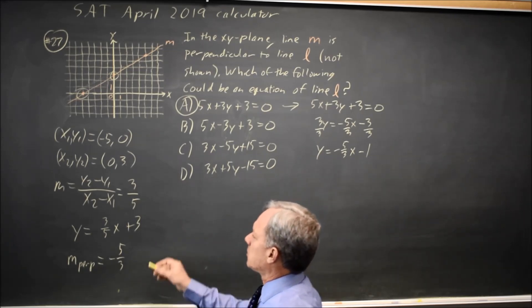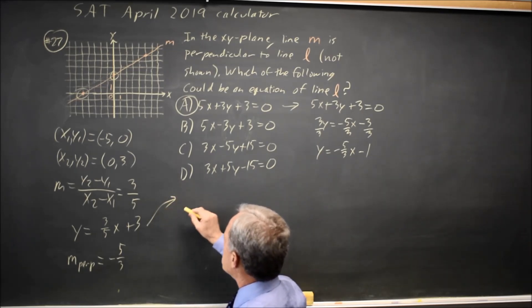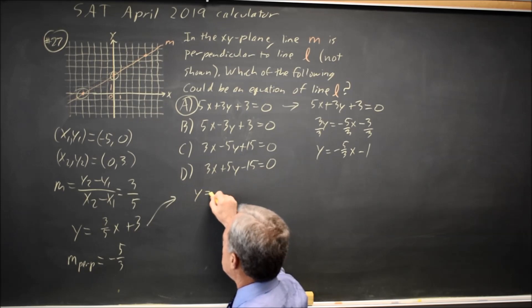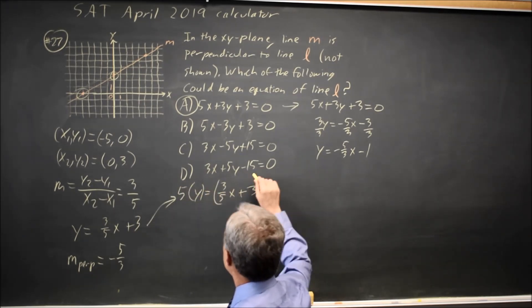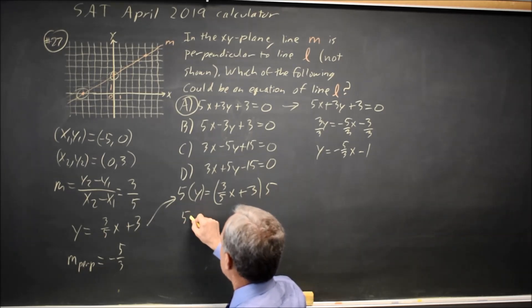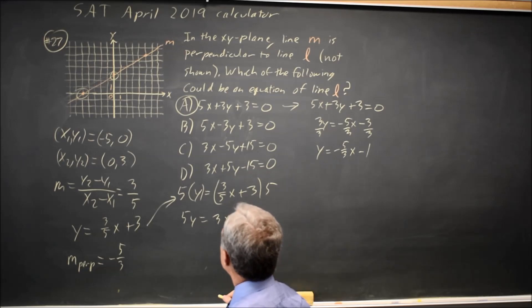But let's go back here and multiply both sides by 5. So y equals 3 fifths x plus 3. Multiply the left by 5. Multiply the right by 5. 5y equals 3x plus 15.